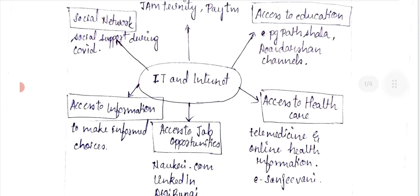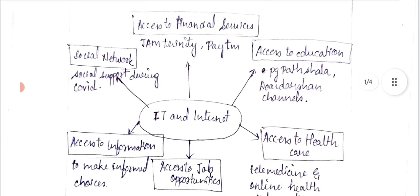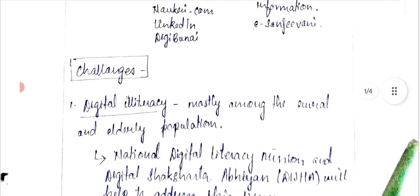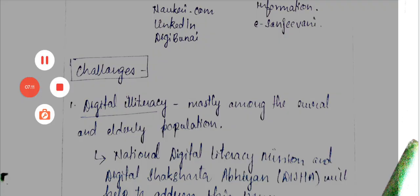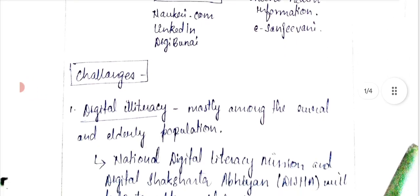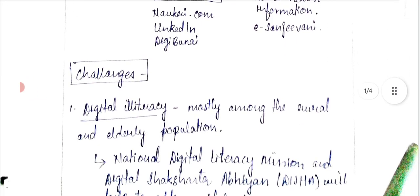These are the various points you need to explain. Since I could not explain all of them in 150 to 200 words, I used a diagram — it helps keep your answer within the word limit. Now let's move forward to the challenges. Along with all the positive points, there are various challenges.